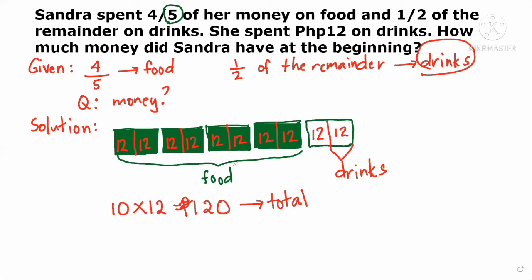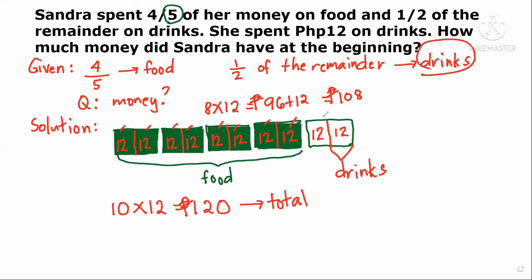Let's verify: how much did Sandra spend on food? There are eight units for food, so eight times twelve equals ninety-six pesos on food. Plus twelve pesos on drinks, so ninety-six plus twelve equals 108 pesos total spent including the drinks.